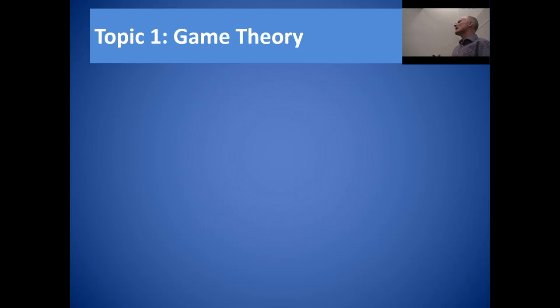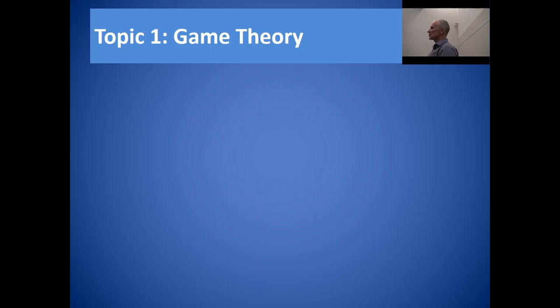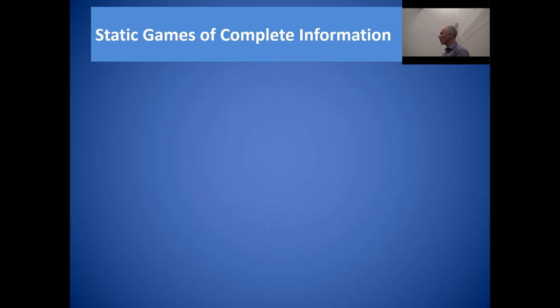What is game theory? In a nutshell, game theory looks at those interactions that take place between economic agents — be they individuals, firms, governments, whoever. That strategic realm of thinking. To introduce you to the fundamentals of game theory, I'm going to start by looking at a particular class of games. These games are going to be what we call static games of complete information.